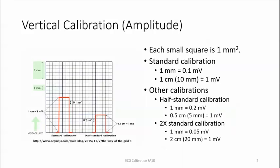We're going to talk about ECG calibration. First, the vertical calibration — the amplitude, which determines how high the waveform goes. Each small square is 1 millimeter squared. Standard calibration, which is what we'll be using: 1 millimeter equals 0.1 millivolts. So 1 centimeter, which is 10 millimeters, equals 1 millivolt.